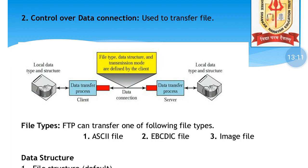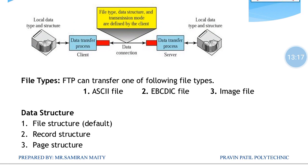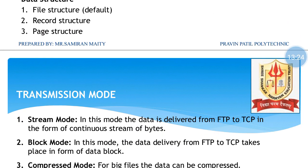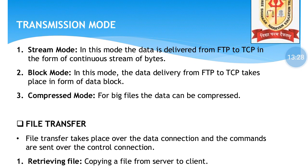FTP can transfer file types including ASCII files, EBCDIC files, image files, and various data structures such as file structure, record structure, and page structure. Regarding transmission modes, stream mode delivers data from FTP to TCP as a continuous stream of bits.